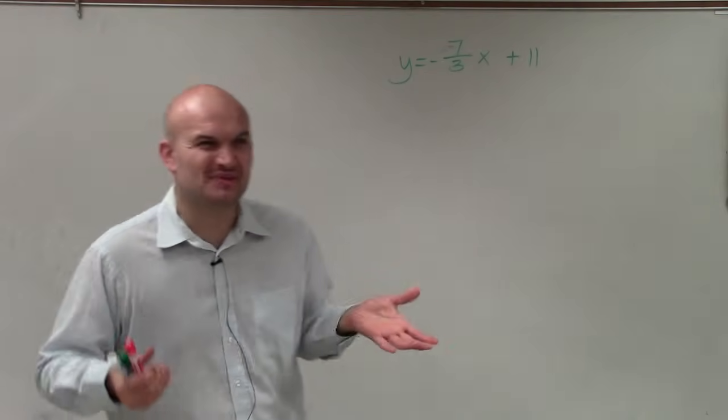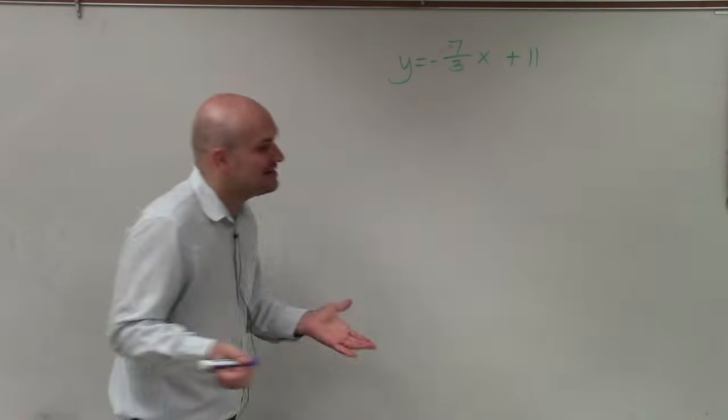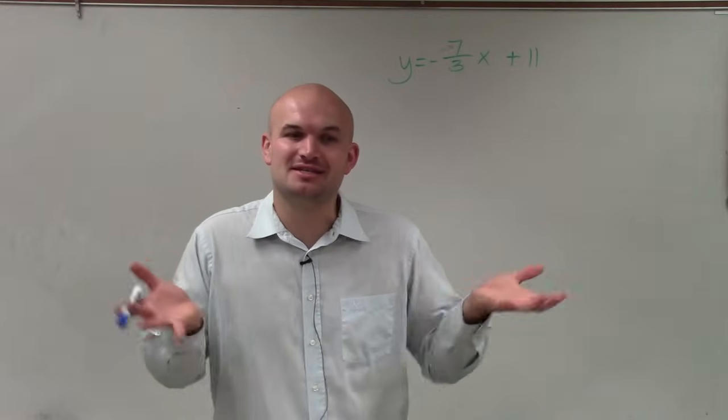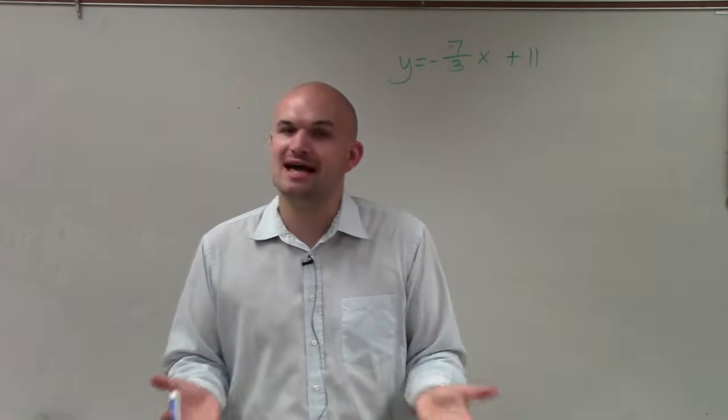And I love this equation because we see 7 thirds, and we're like, ah, that's not a nice fraction. How is this going to help us graph it? But the nice thing about graphing slope-intercept form is it doesn't really matter what the fraction is. When our fraction is our slope, that actually just helps us out.